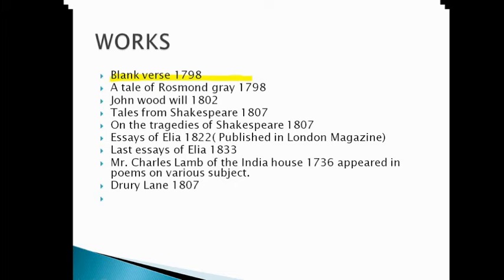The next important works are Essays of Elia and Last Essays of Elia. Please do not confuse these two works — students often get confused because both names are similar. Essays of Elia was written in 1822 and Last Essays of Elia was written in 1833. Also remember that Essays of Elia was published in the London Magazine. Another work is Rosamund Gray, written in 1807. Please take a screenshot and keep all these important points in mind for the UGC NET exam.